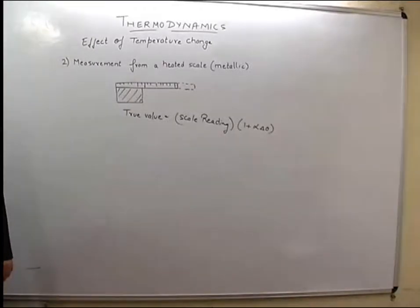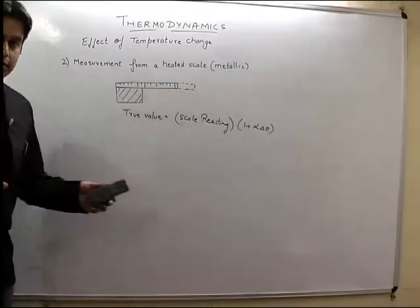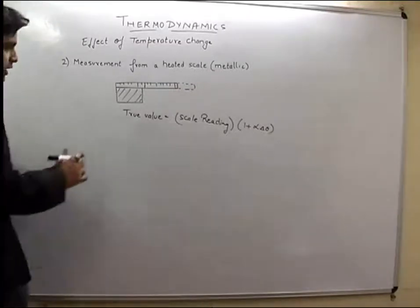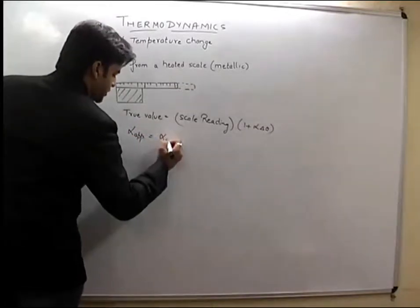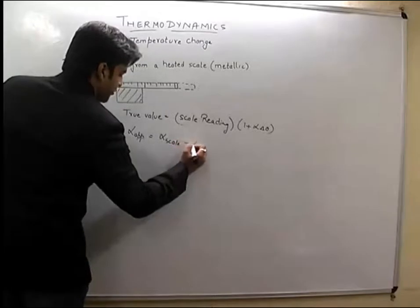Now if the object to be measured also expands on heating, so in this case, we will use alpha, alpha apparent. This will be equal to alpha scale minus alpha body.